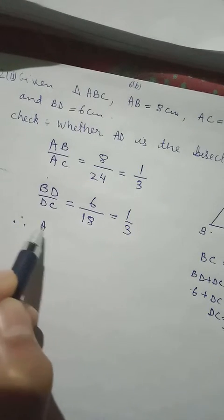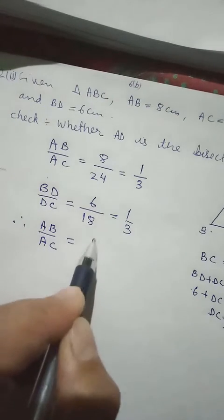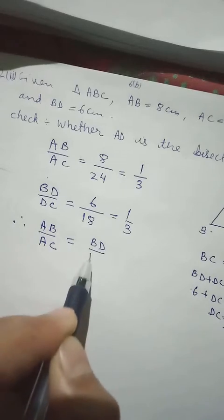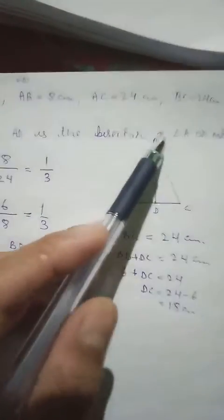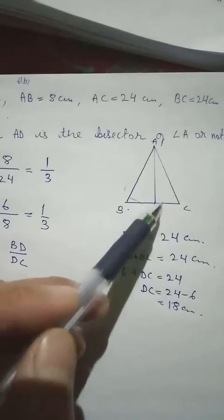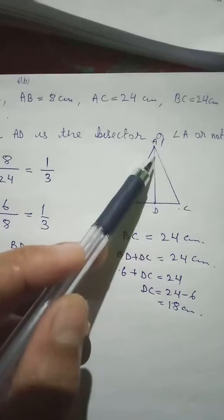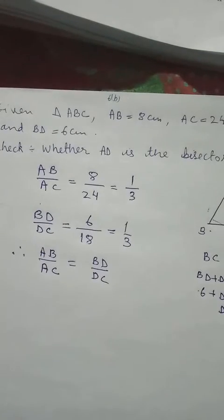So if both the ratios are the same, that means we can conclude that, when we compare from the diagram, we have the ratio of the side containing angle A and the ratio which is cut by the angle bisector. Since they are equal, we can say that AD is a bisector of angle A.